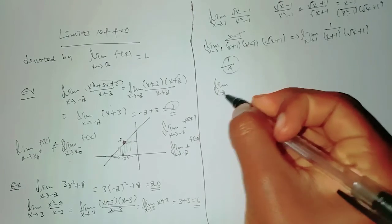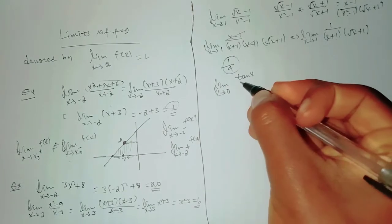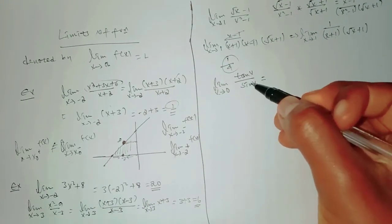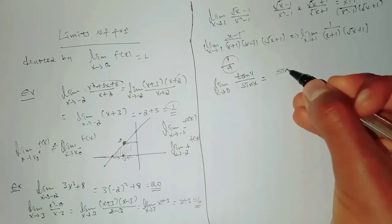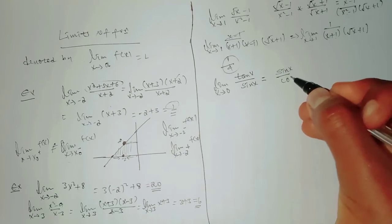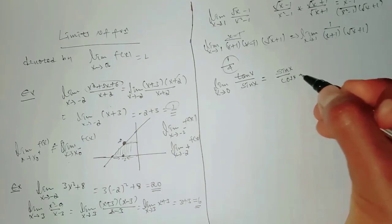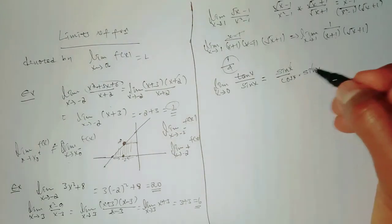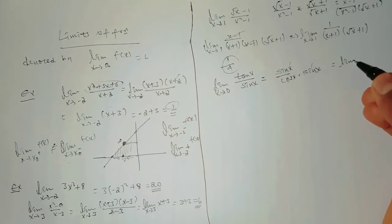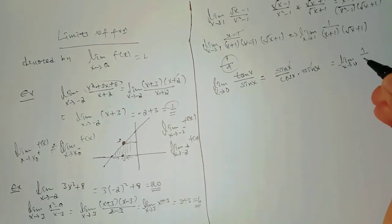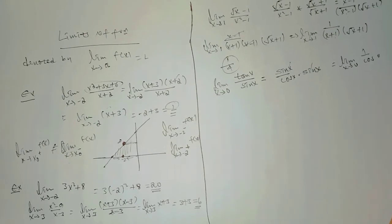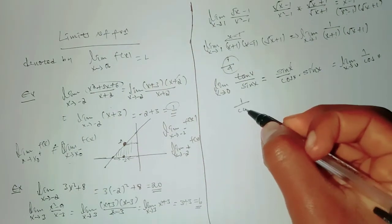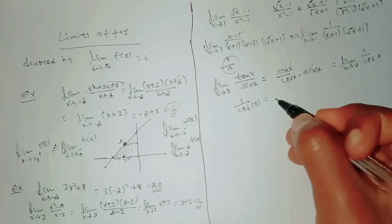Example: limit x goes to 0 of tan x over sin x. Since tan x equals sin x over cos x, this becomes sin x over cos x times 1 over sin x, which simplifies to 1 over cos x. Substituting x equals 0: 1 over cos 0 equals 1 over 1 equals 1.